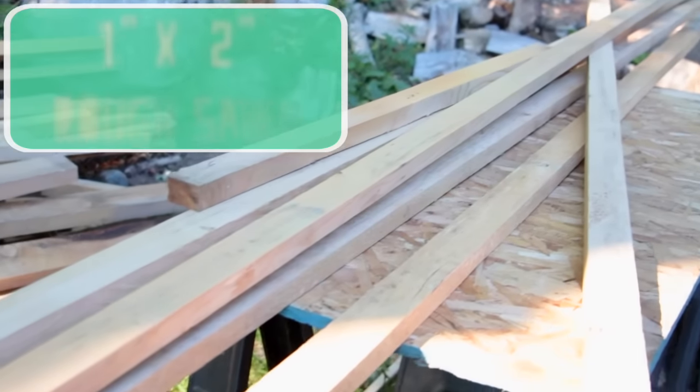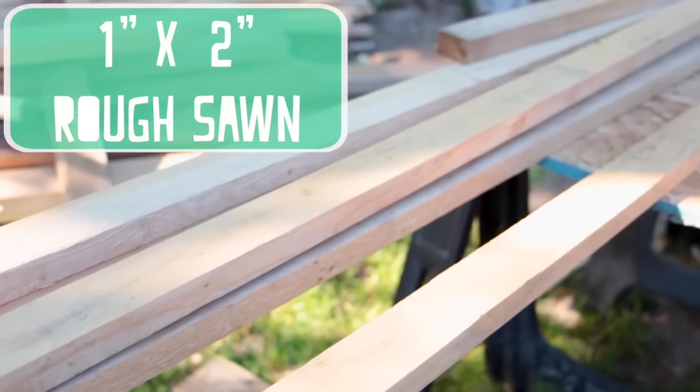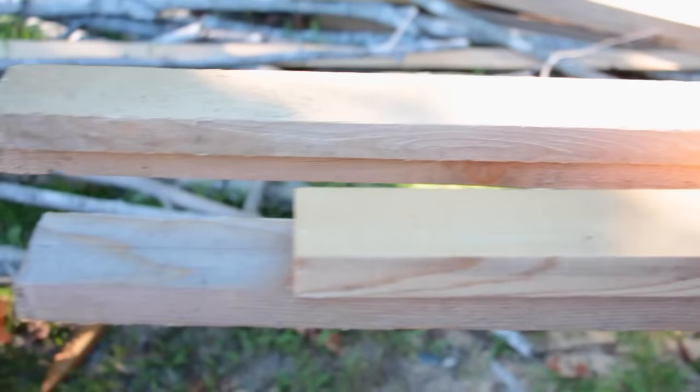I first started off with these 1x2 rough sawn lumber pieces and had my dad cut them into 29 inch lengths. Once I had 20 of those pieces, he ran them down the table saw to make them 1x1. So then I had 40 1x1 29 inch length pieces.